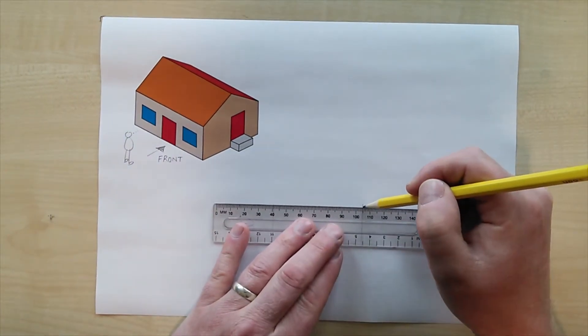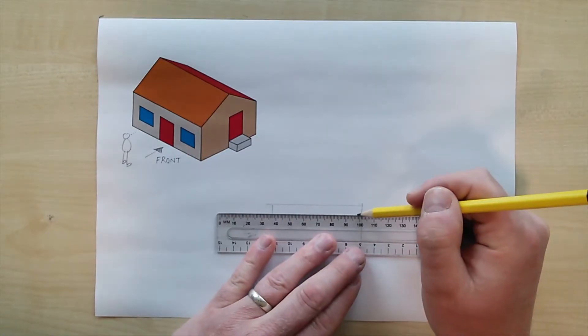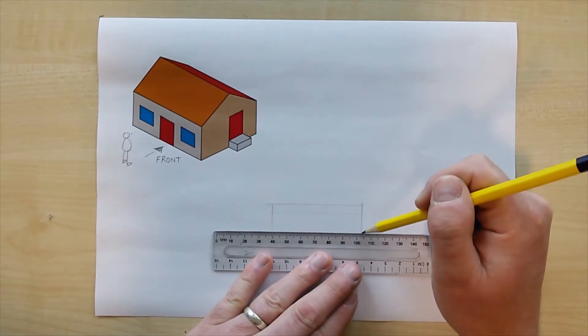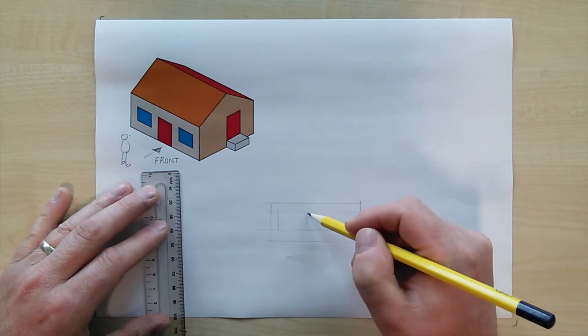Then I pick up the pencil and I'm using a ruler in this case, you don't have to use a ruler if you don't want to, but I'm using very light lines we call these construction lines, incredibly light.